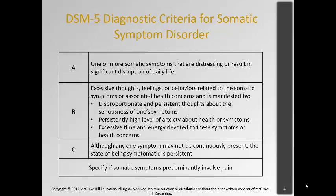The DSM-5 diagnostic criteria for somatic symptom disorder include: Criteria A — one or more somatic symptoms that are distressing or result in significant disruption of daily life. Criteria B — excessive thoughts, feelings, or behaviors related to the somatic symptoms or associated health concerns, manifested by disproportionate and persistent thoughts about the seriousness of one's symptoms, persistently high levels of anxiety about health symptoms, or excessive time and energy devoted to these symptoms or health concerns.